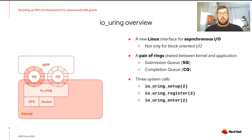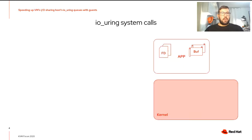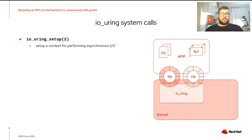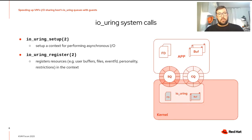There are three system calls exposed by IOUring. The first is IOUring setup, the first system call to invoke to set up the context for performing asynchronous I/O. Several flags and parameters can be specified, such as the ring size. It returns a file descriptor that identifies the context and must be used with the other system calls. The second is IOUring register, used during the initialization phase of the rings, or even afterwards to change registered items, but it's not used in the critical path.